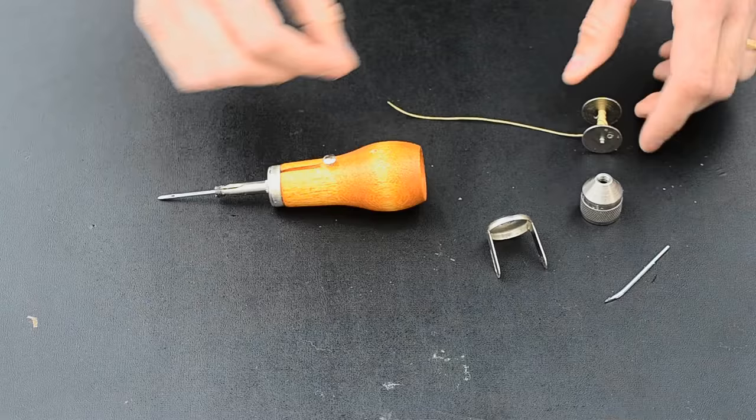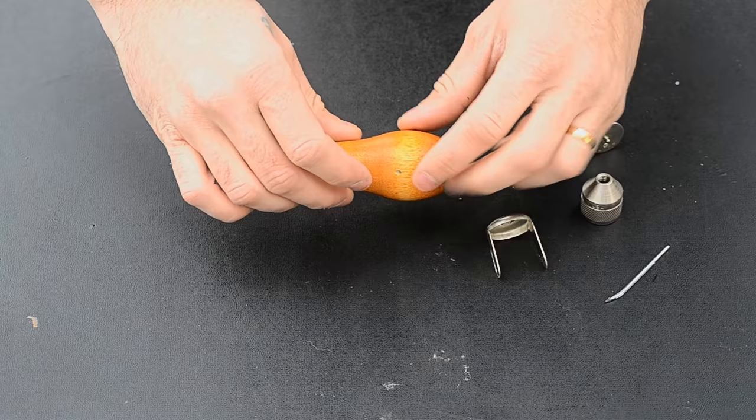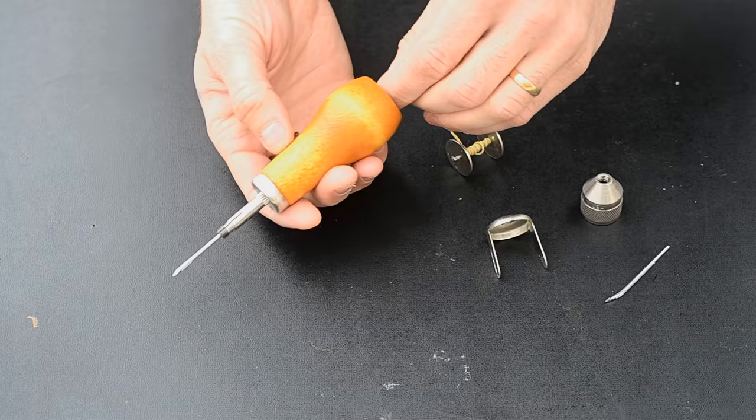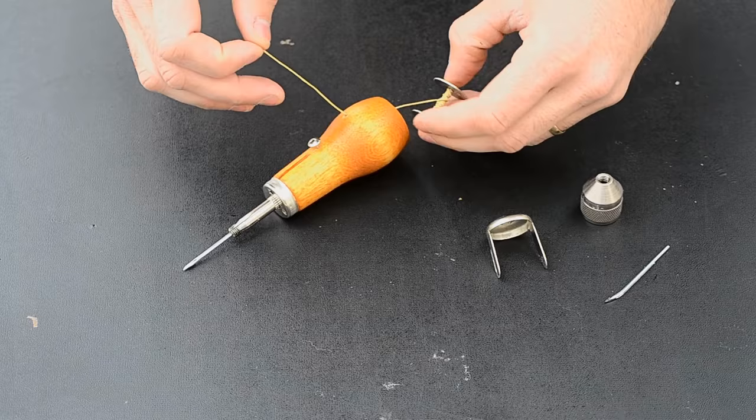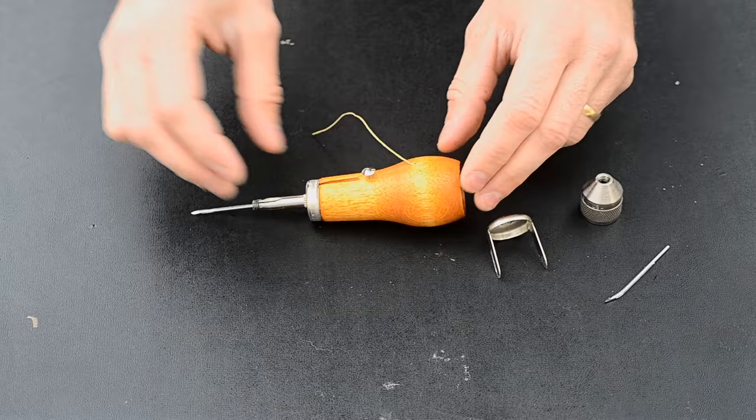Now take your bobbin with a thread wrapped around it and place it through the center of the body of the stitcher, out the hole on the side. Place the bobbin inside the stitcher so that it will unravel when you pull on the thread. Now place the end cap back on.